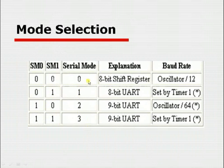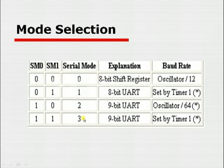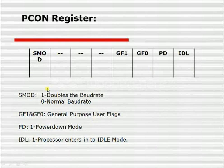There are four UART modes. Mode 0 is an 8-bit shift register with baud rate = oscillator / 12. Mode 1 is an 8-bit UART with baud rate set by Timer 1. Mode 2 is a 9-bit UART, and Mode 3 is also a 9-bit UART — both Mode 2 and Mode 3 are used for multiprocessor communication. In most applications, only Mode 1 is used.